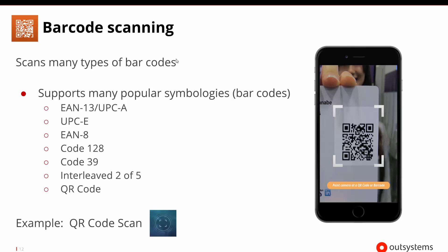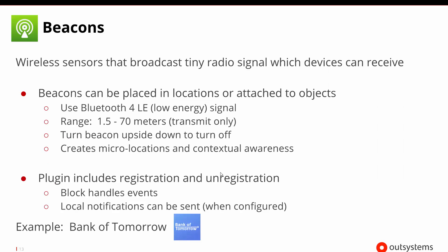There is a barcode scanning plugin that allows us to scan barcodes, and there are a lot of different types of barcodes including QR codes. So depending on what you're trying to scan, the barcode scanning plugin, if it's a standard and popular symbology, should be able to go ahead and handle that for you.